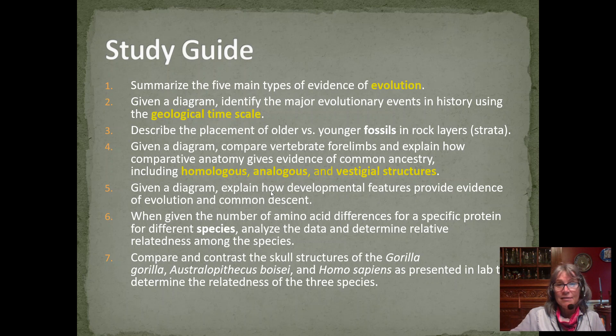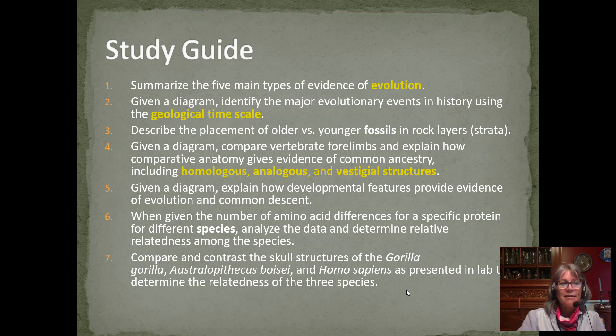You should be able to explain how developmental features provide evidence of evolution and common descent through embryonic development. And when given a number of amino acid differences for a specific protein from different species, you should be able to determine the relatedness of the species. You will also compare and contrast the skull structures of Gorilla gorilla, Australopithecus boisei, and Homo sapiens, and determine the relatedness of the three species.